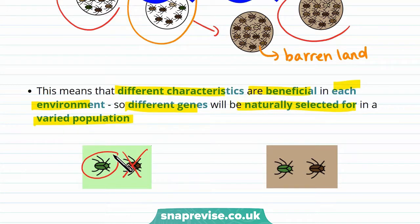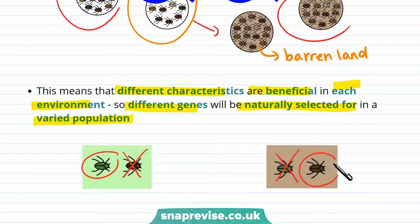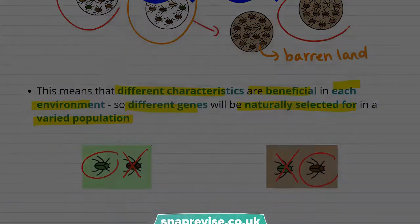Over many generations, more of the beetles in the grassland become green. In the barren land, it's easier to see the green beetles, so they're more likely to die. The brown beetles have an advantage, so they're more likely to survive and pass on their genes. After many generations, more of the beetles in the barren land will be brown. This build-up of different characteristics means the species become so different that they can't reproduce to produce fertile offspring.